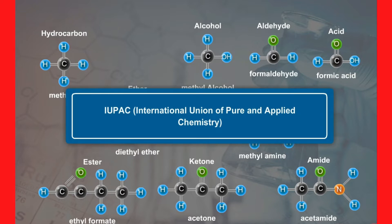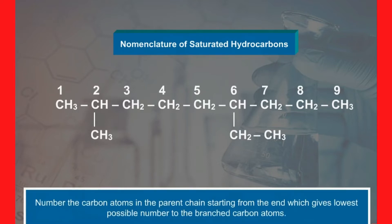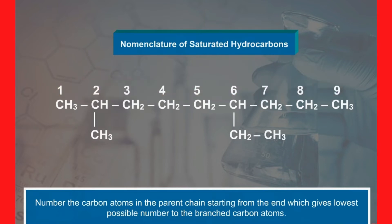Let us discuss these rules. In the nomenclature of saturated hydrocarbons, the following rules are applied. Select the longest continuous chain of carbon atoms in the molecule. The compound is named as a derivative of this alkane. Number the carbon atoms in the parent chain starting from the end which gives the lowest possible number to the branched carbon atoms.